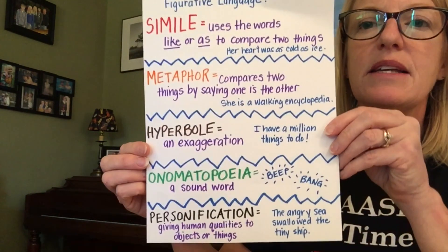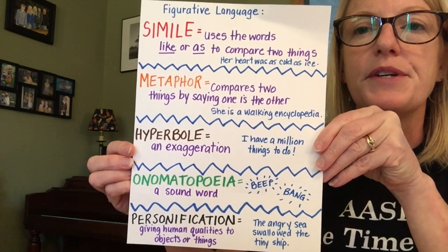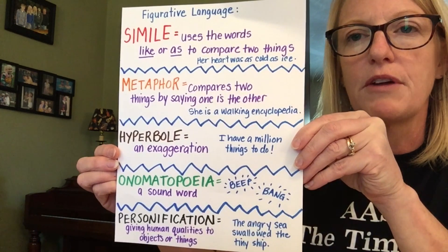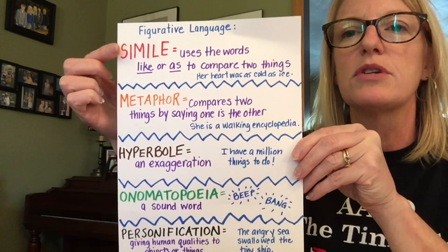A simile is a figure of speech. You probably remember learning about figures of speech — similes, metaphors, hyperbole, onomatopoeia, and personification. You'll also see a graphic of these at the end of the video so you can refer to it. We're going to focus on just the simile: a simile is when we use the words 'like' or 'as' to compare two things.